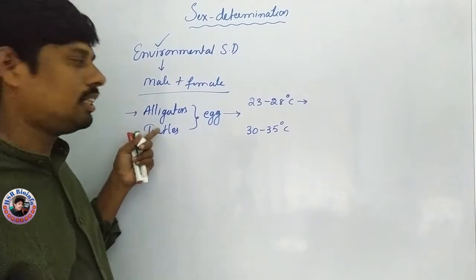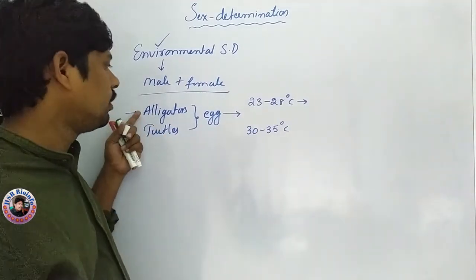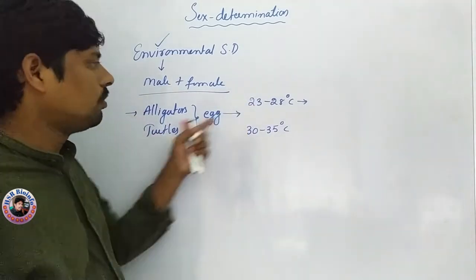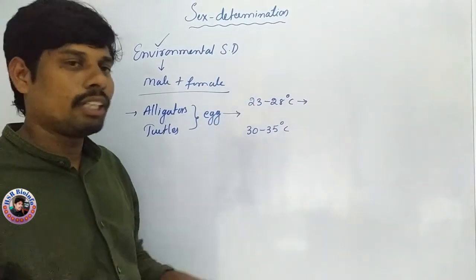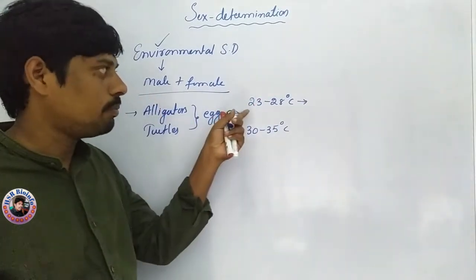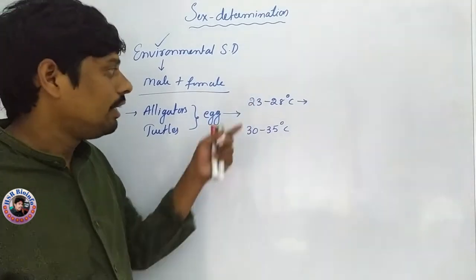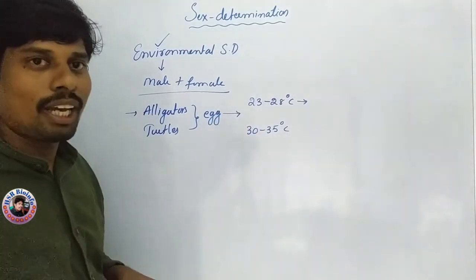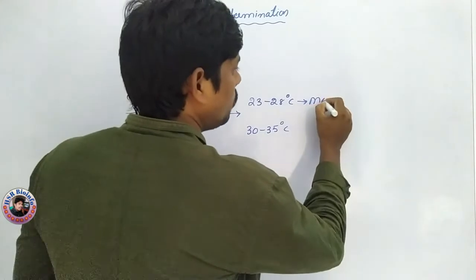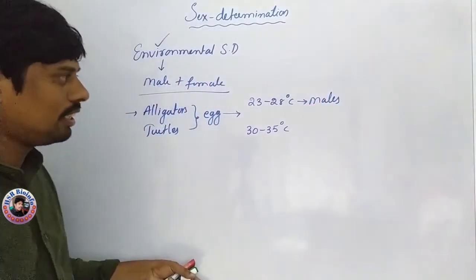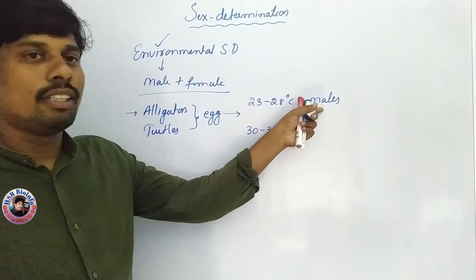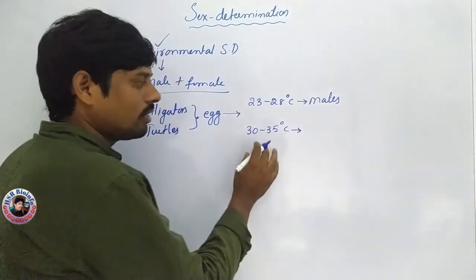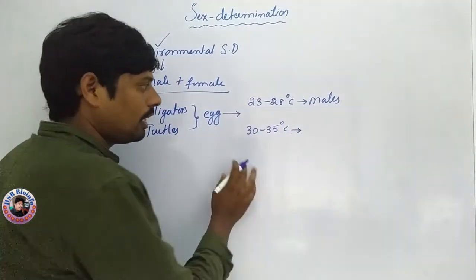Some important temperatures: for example, 23 to 28 degrees centigrade temperature, final babies 23 to 28 degrees centigrade. Males generate at 35 degrees centigrade. Females.